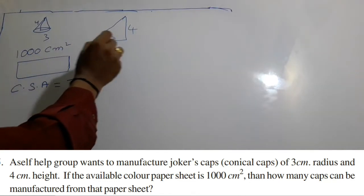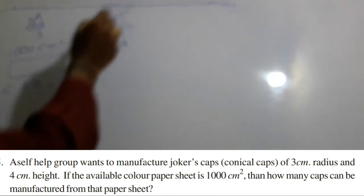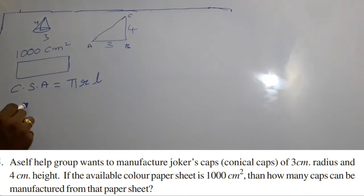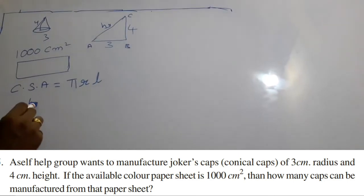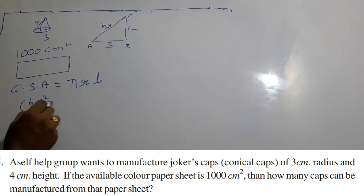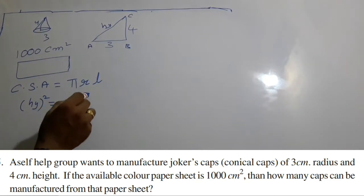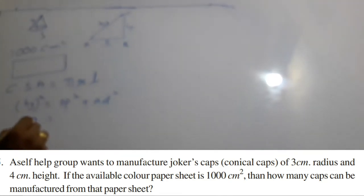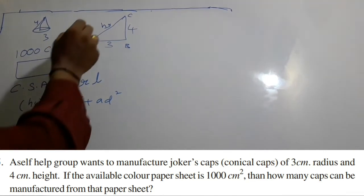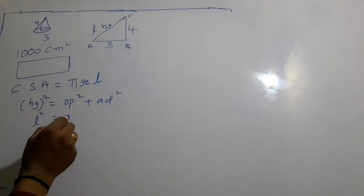By the Pythagorean theorem, the hypotenuse squared is equal to opposite side squared plus adjacent side squared. This is the formula. The hypotenuse is the slant height l, which we don't know. So l² equals opposite is 4 squared.